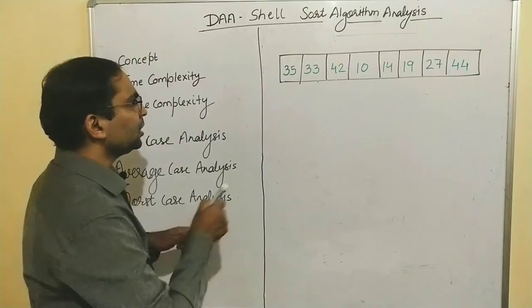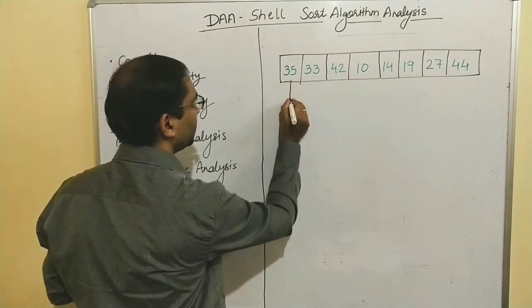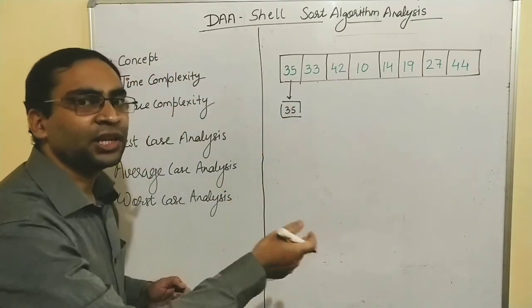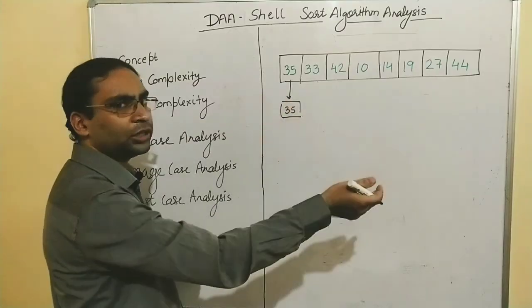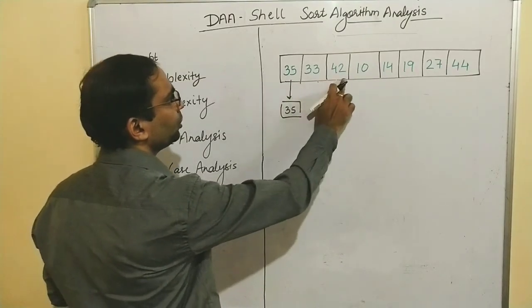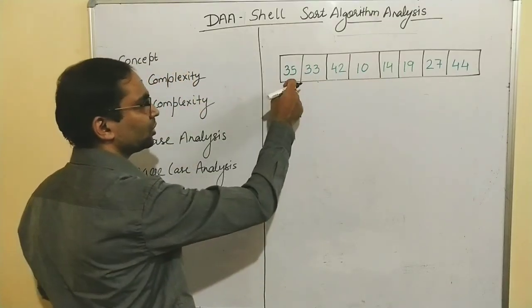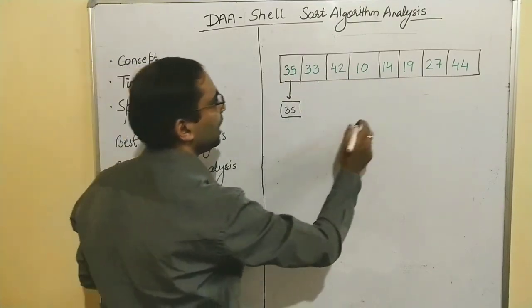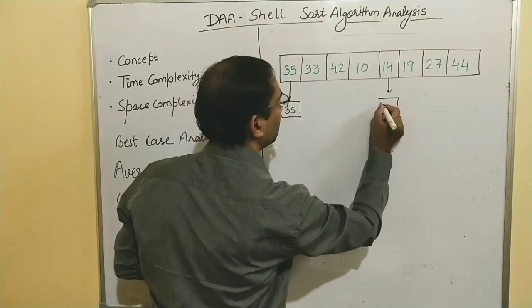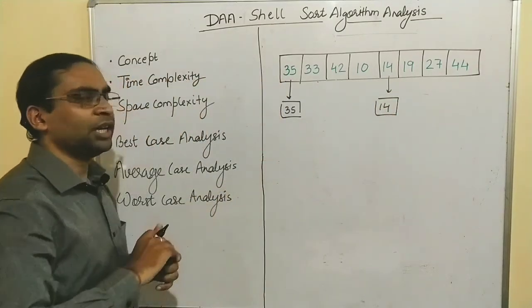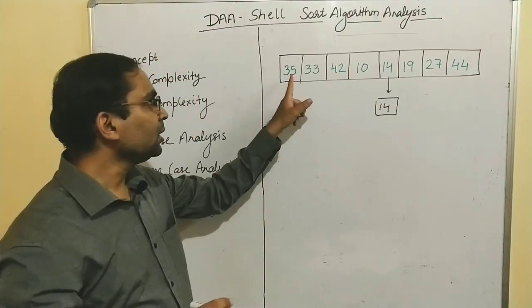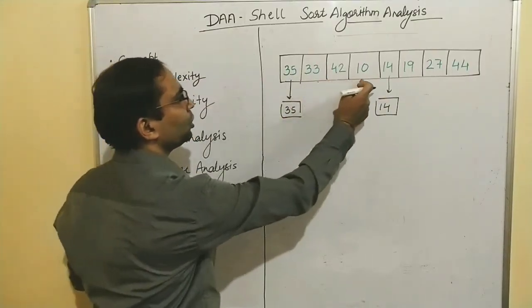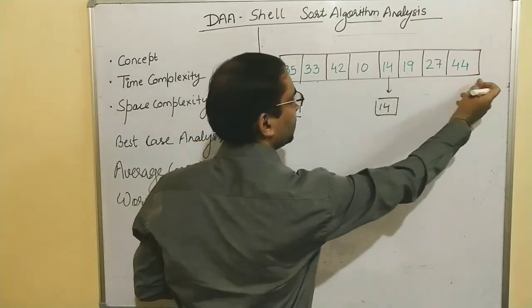With the interval of 4, we pick the first element — that is 35 — and then pick the next element at distance 4. Indexing from 0, the element at index 4 is 14. So 35 and 14 form the first pair. After that, there is no next element to pair with, so this is our first sublist.